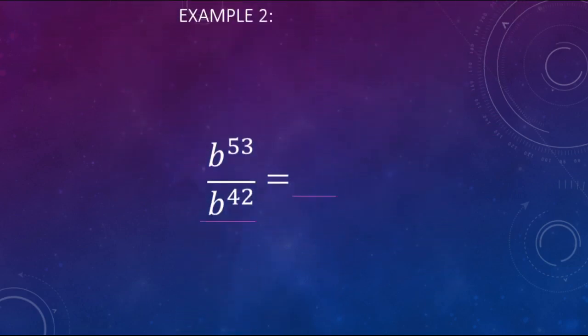Another example here. b to the 53rd power over, or divided by, b to the 42nd power. So we know the base is going to be b, so it's going to be b to some power there. And we are going to be subtracting those exponents. 53 minus 42 makes 11. So b to the 11th power is the simplified way of looking at this expression here.